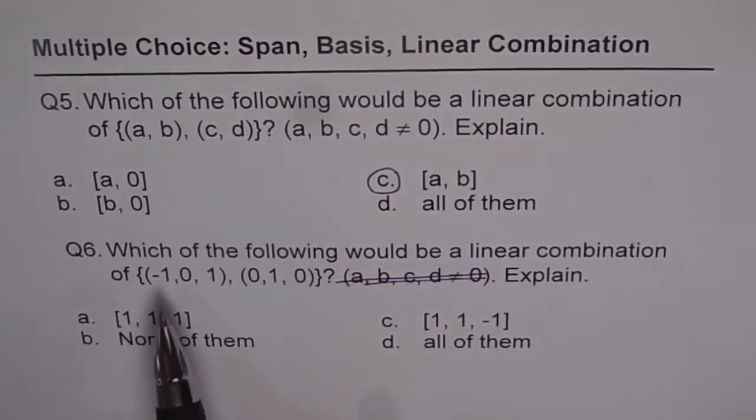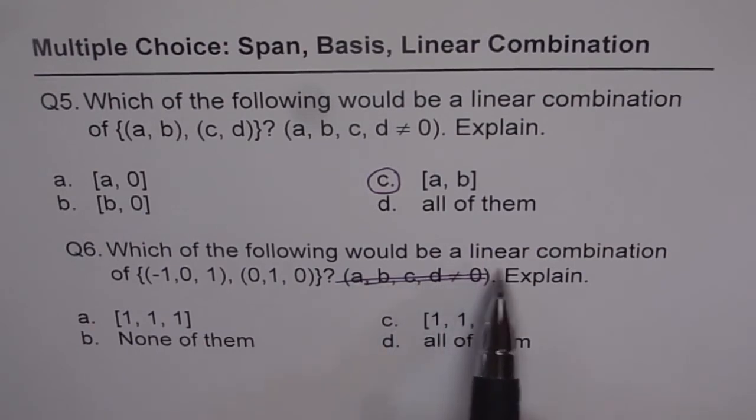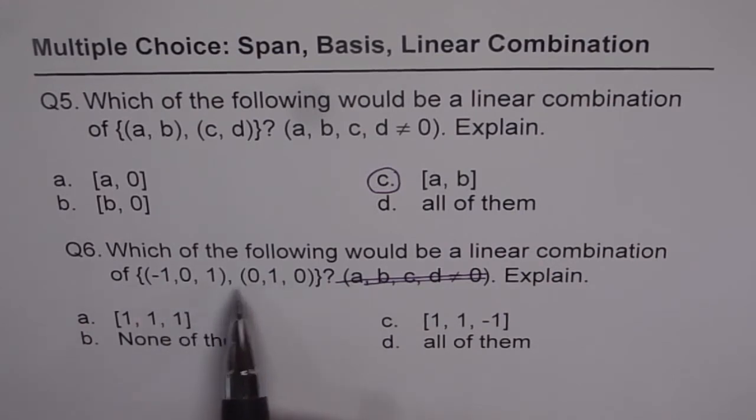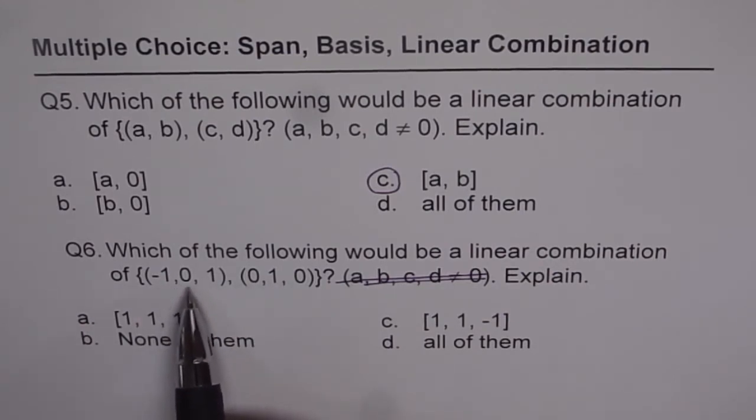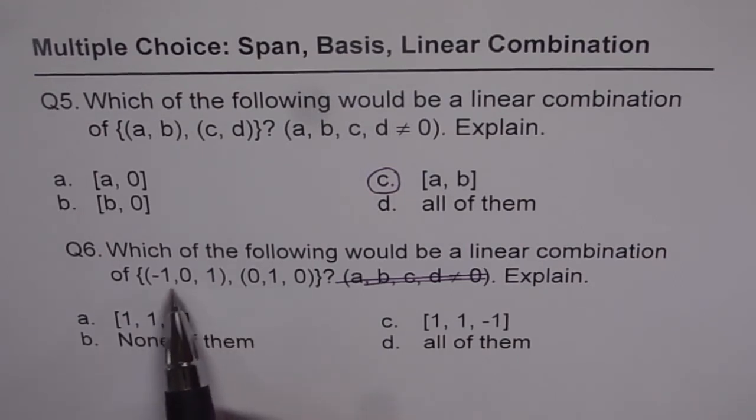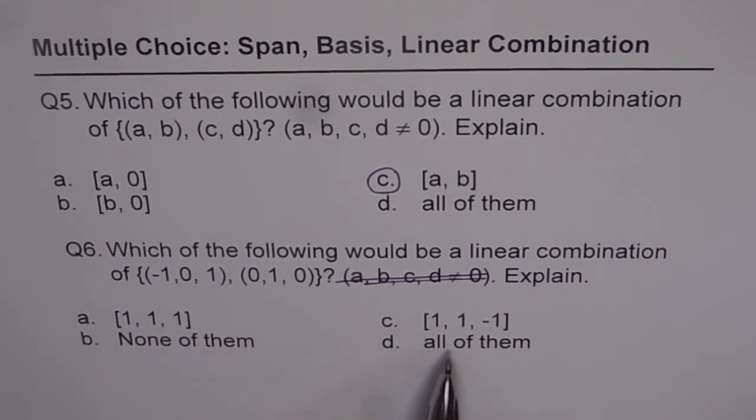Question 6: Which of the following would be a linear combination of these two vectors? Now, if you see the two vectors, they can span a plane in R3. In this case, we have different choices: none of them, all of them, (1, 1, 1), and (1, 1, -1).